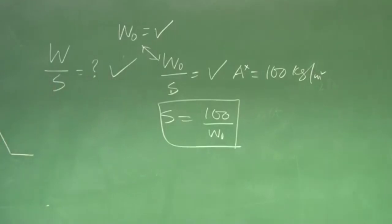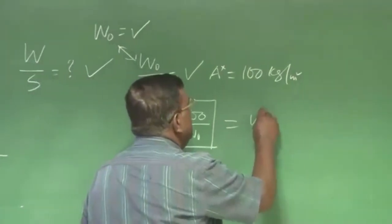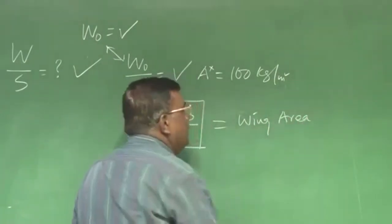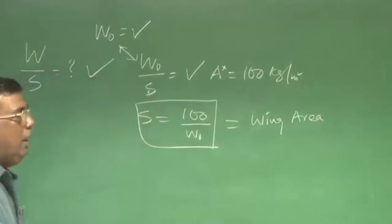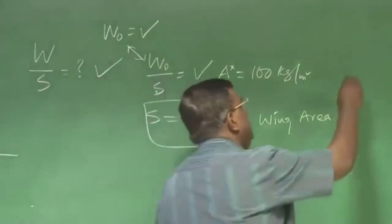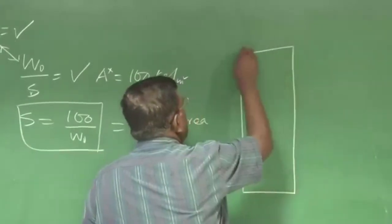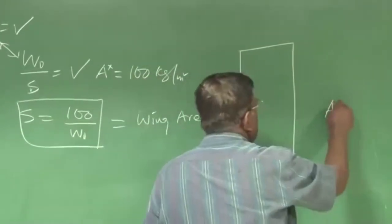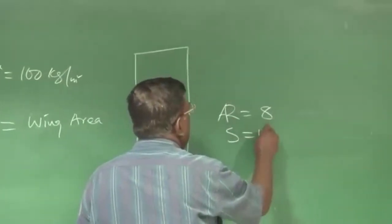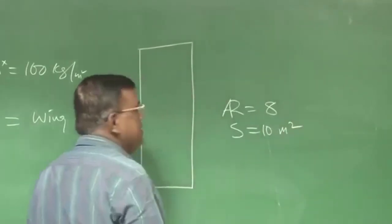Let us say 100 kg per meter square. And since I already know W naught, from here I get the value of S. Once I get S — the wing area — then now I have to lay out that area. We have assumed some aspect ratio. So, let us say I have taken aspect ratio equal to 8 and wing area around 10 meters square, just a number.